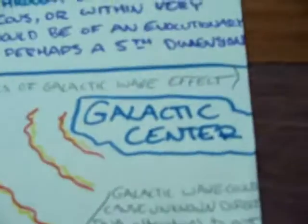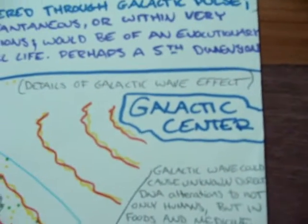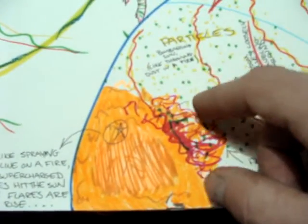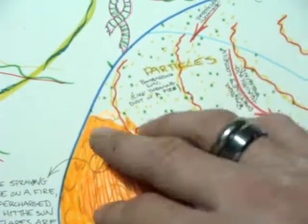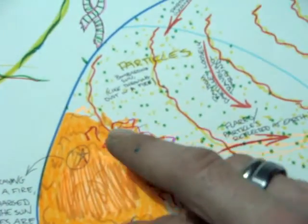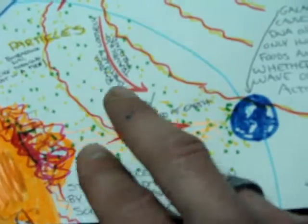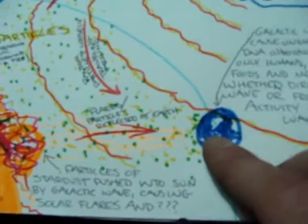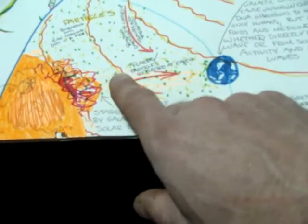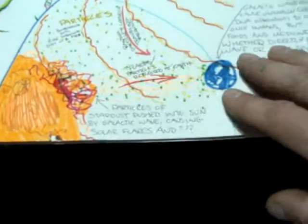Down here I have a better little explanation. Here's the galactic center — it sends the waves in. Green and yellow particles hit the sun. They create internal problems within the sun, which in turn shoot their own photons and radiation back out at the Earth. So these flares and particles are reflected back at the Earth.